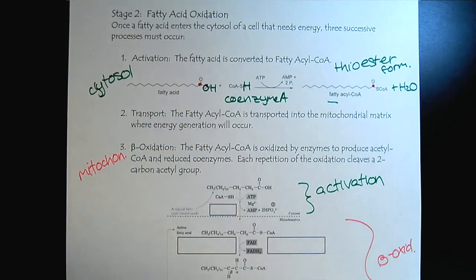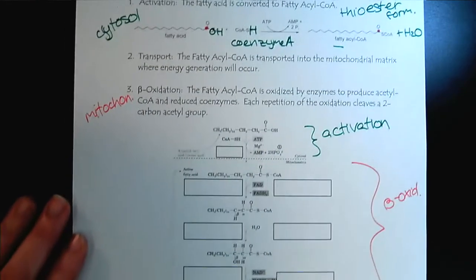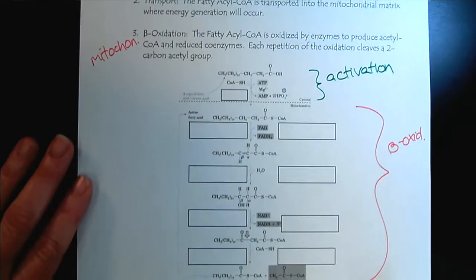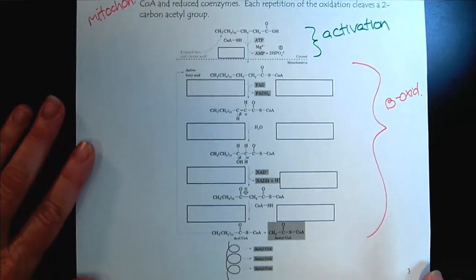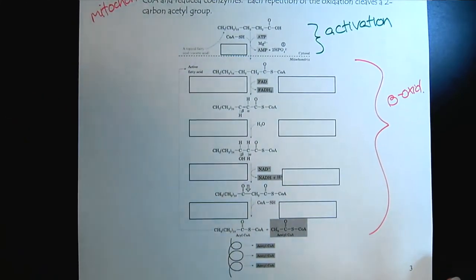So the activation happens in the cytosol. And then it has to get transported to the mitochondria. And then beta-oxidation takes place here in the mitochondria.